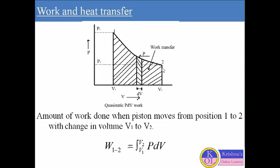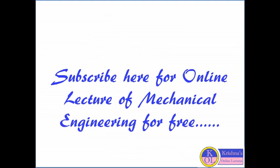If the piston moves infinitely slowly, at every state between point 1 and point 2 on the path, every intermediate state is in equilibrium. So we can say the P dV work is performed only on a quasi-static path. This was all about work transfer. I will discuss some other points of work transfer in the next lecture, and in another lecture I will discuss heat transfer also. Thanks for watching the video, and subscribe to the channel for more lectures.